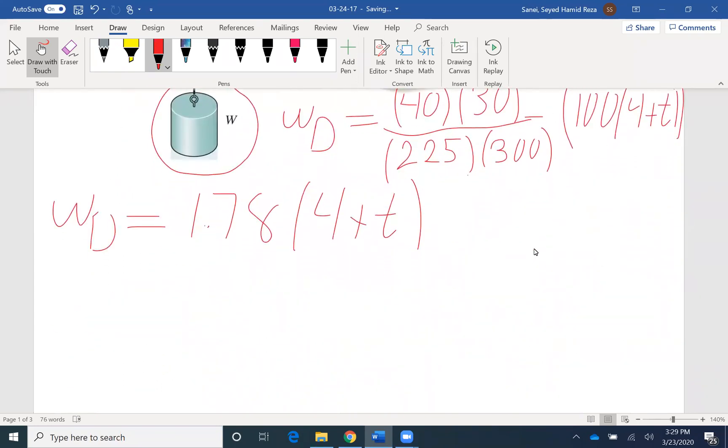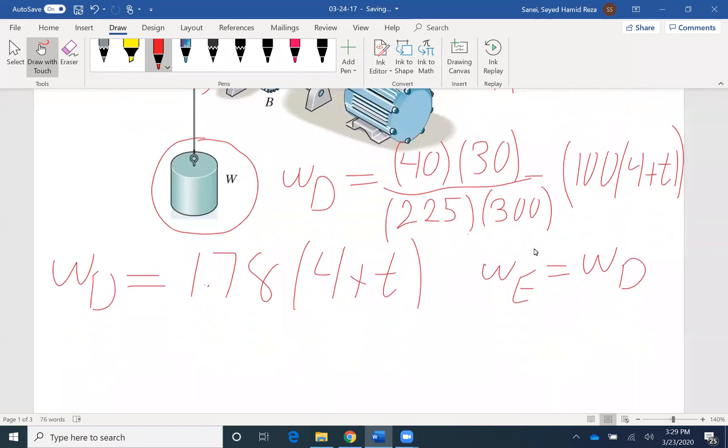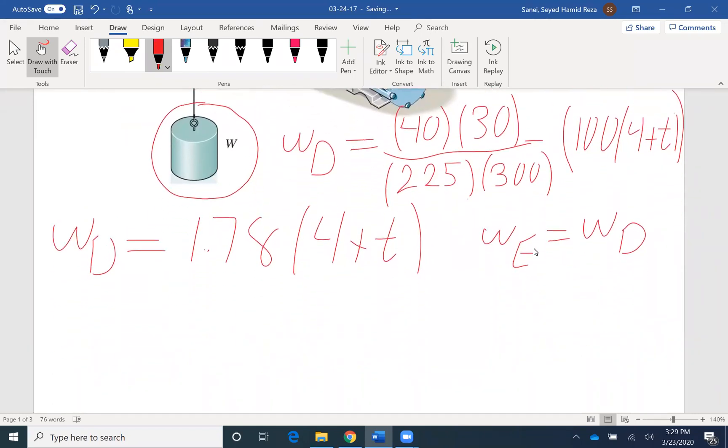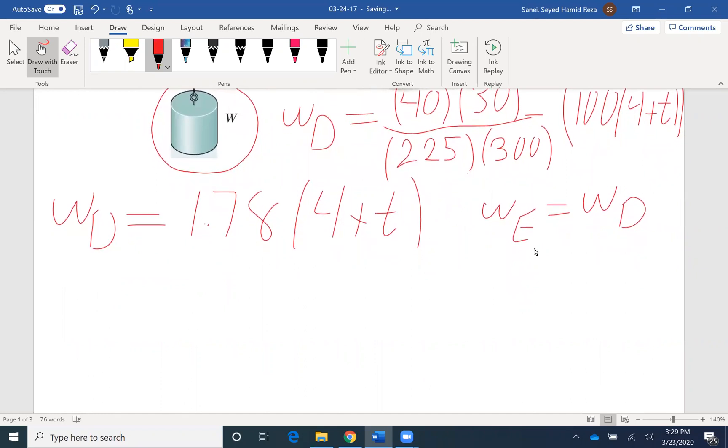Now that we have omega D, we know that omega E is the same as omega D. Because we want to find a distance it travels, first we need to find the angular displacement. The angular displacement, d theta, is related to omega. So omega is d theta over dt.